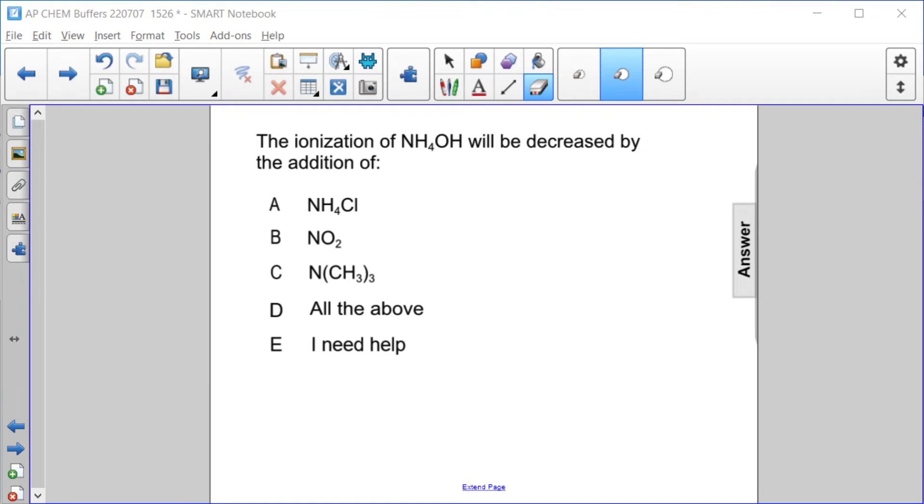The ionization of NH4OH will be decreased by the addition of which of the following? So the ionization of NH4OH, a weak base, looks like this.